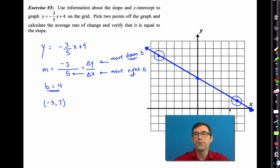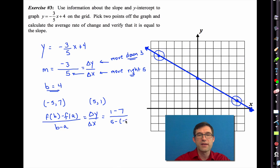We can now, of course, connect these with a nice straight line. Now, it says pick two points off the graph and calculate the average rate of change and verify that it's equal to the slope. So we have the point negative 5, 7, and 5, 1. The average rate of change is 1 minus 7 divided by 5 minus negative 5. 1 minus 7 is negative 6, and 5 minus negative 5 is positive 10. Now that may not look like the correct slope, but we can always reduce it by dividing both numerator and denominator by 2, and that will give me negative 3 fifths, which is exactly the slope that I should have gotten.